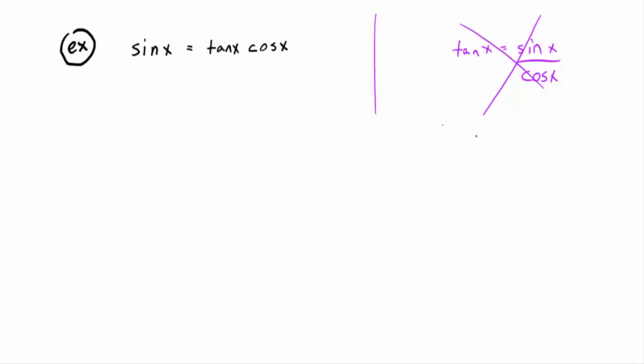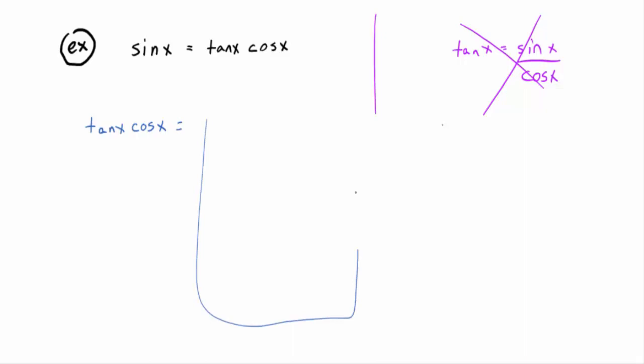To prove an identity, you start with one side and through either other identities or algebraic operations, you turn it into the other side. You don't touch the other side; you don't treat it like an equation. That method won't work every time. The way I'm going to require you to do it: write down the side you're starting with. A guideline — not a rule — is to start with the side with more stuff on it.